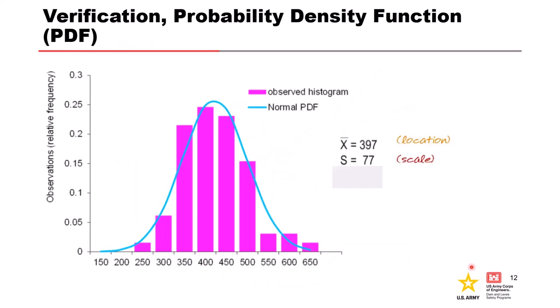All right so the blue pdf is the computed normal distribution compared to our sample histogram that we started with. How well do we think this distribution agrees with the data? So the question is how does this normal pdf look as far as a representation of our observed histogram? The sample statistics computed are the sample mean or x bar equals 397 and the sample standard deviation S equals 77.